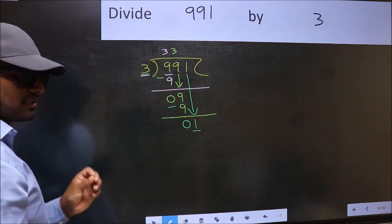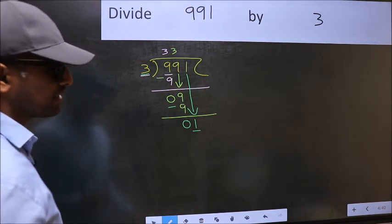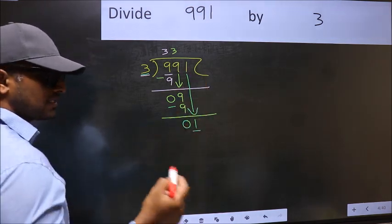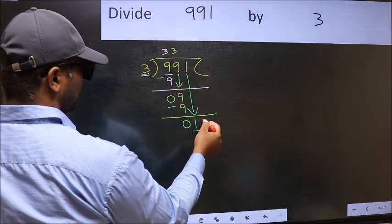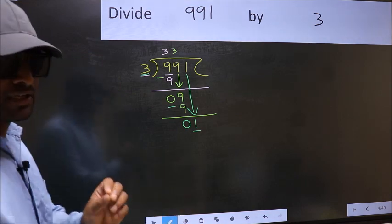Which is wrong. Why is it wrong? Because just now you brought this number down. And in the same step, you want to put a dot and take 0. Which is wrong.